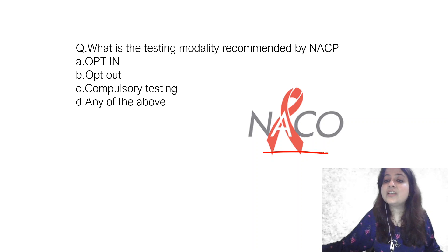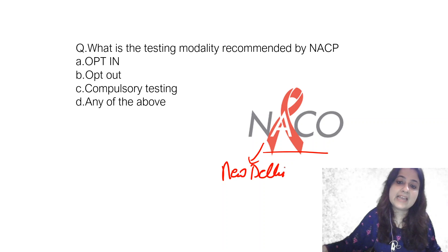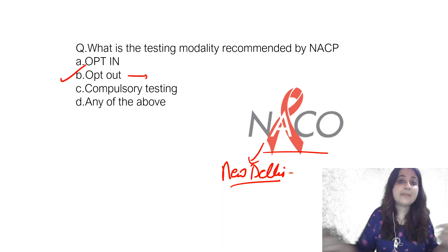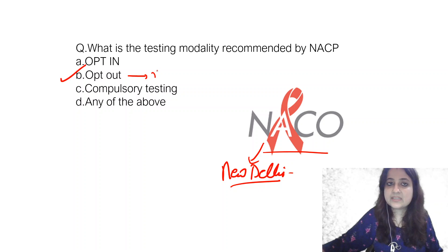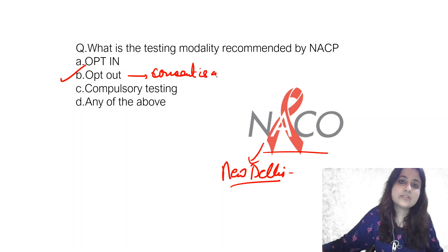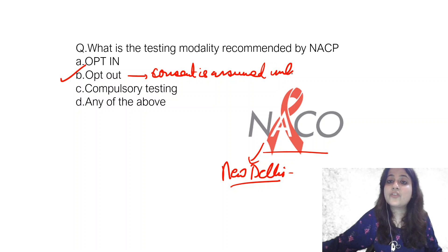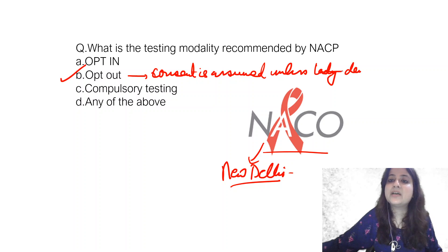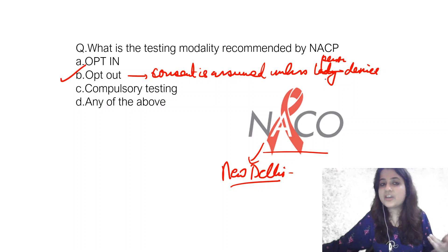This logo is for the National AIDS Control Program, headquartered in New Delhi. According to this program, we opt for opt-out testing. That means routine tests are offered to a person and consent is assumed — unless the person denies it. For antenatal mothers, we go for opt-out testing, as recommended by both CDC and WHO. Routine tests offered include HIV, HBsAg, VDRL, and hemoglobin.